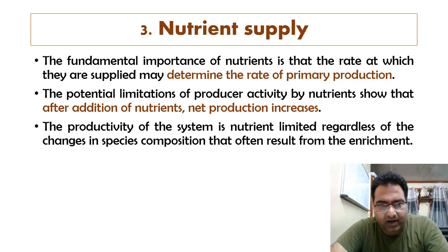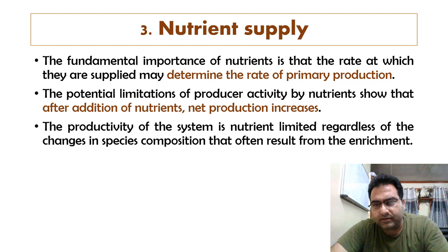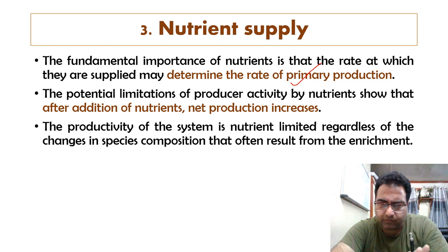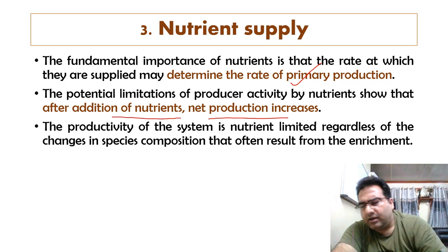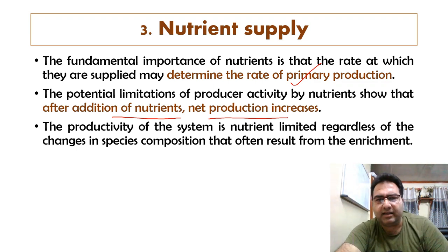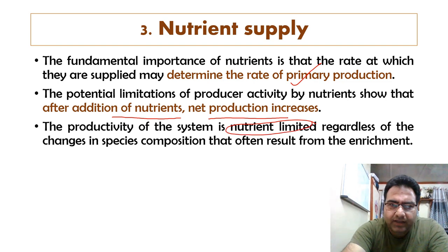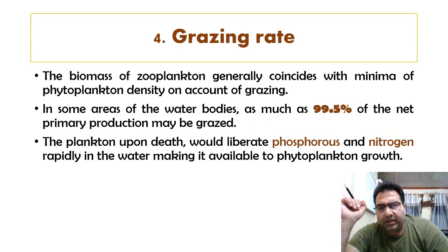The third important factor is nutrient supply. Nutrients are of fundamental importance and the rate at which they are supplied determines primary production. In many experiments, if nutrients are increased, production increases. The productivity of the system is nutrient-limited regardless of changes in species composition that often result from enrichment.